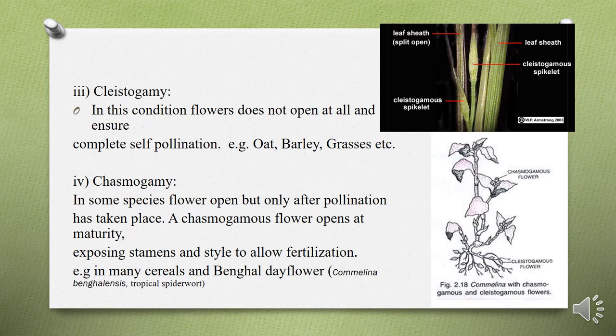In cleistogamy, flowers do not open at all, ensuring complete self-pollination with no chance of cross-pollination. In chasmogamy, in certain species, flowers open only after pollination has already taken place. A chasmogamous flower opens at maturity, exposing stamens and style to allow fertilization, but since pollination has already occurred, chasmogamy is also a condition that facilitates self-pollination.